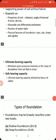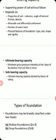Ultimate bearing capacity is the minimum gross pressure intensity at the base of the foundation that causes the soil to fail in shear. Alternatively, ultimate bearing capacity may be defined as the least gross pressure which will cause shear failure of the supporting soil immediately below the foundation. Safe bearing capacity is the maximum pressure which the soil can carry safely without the risk of shear failure.